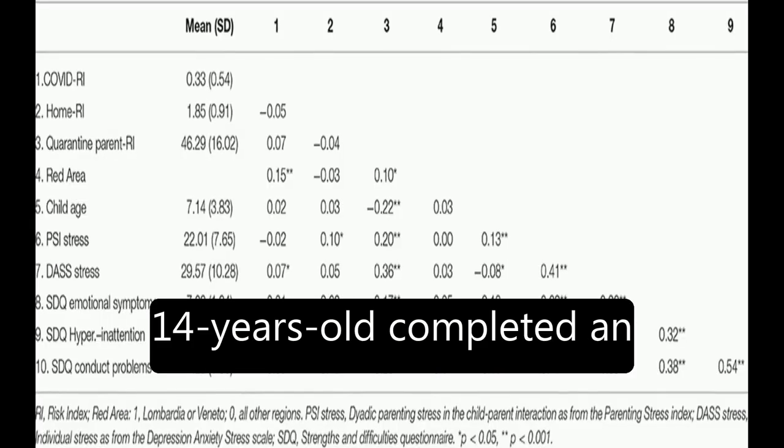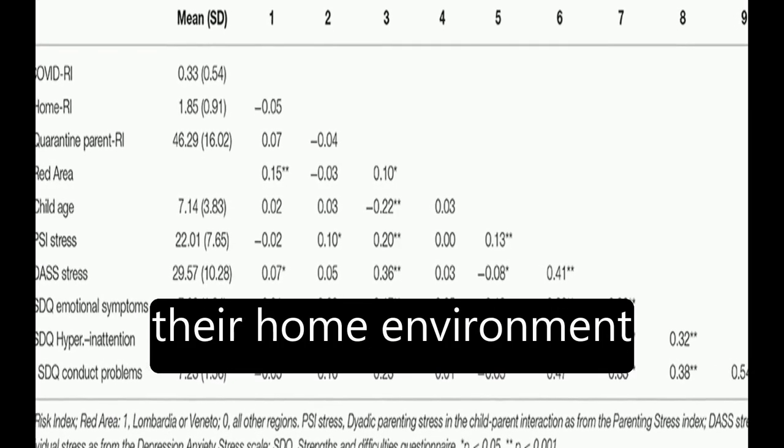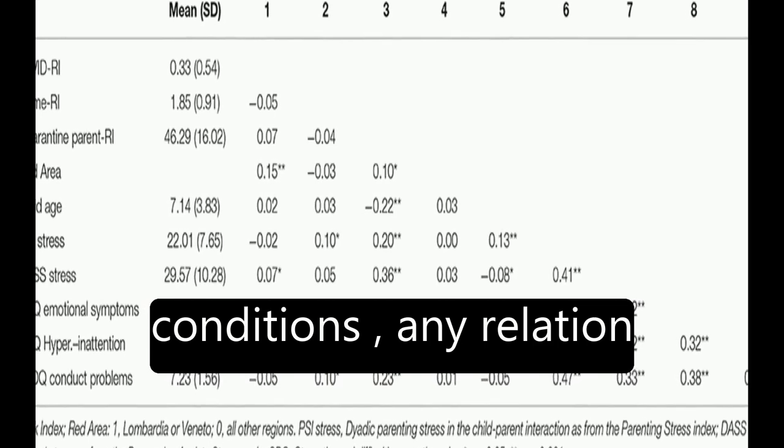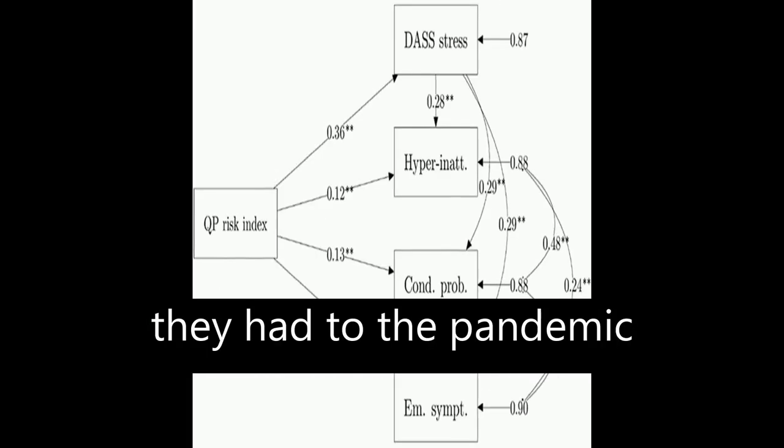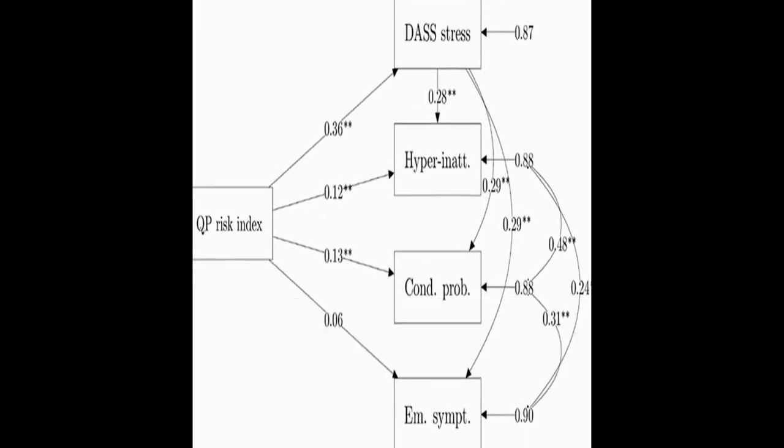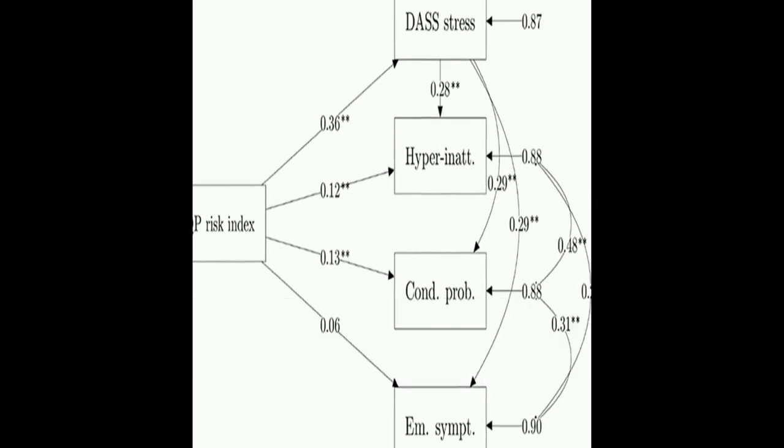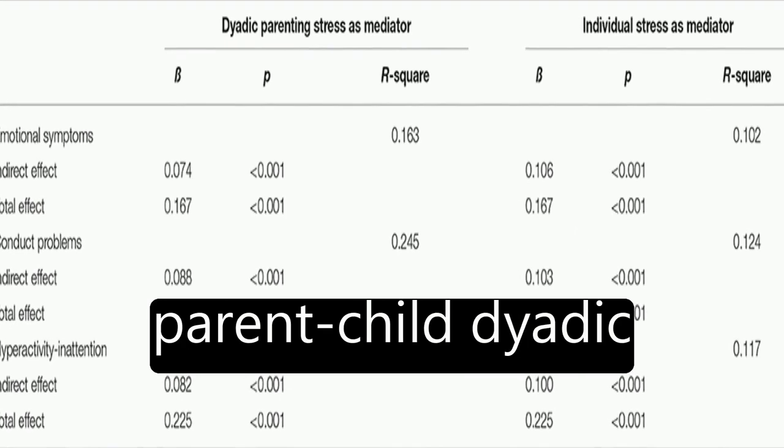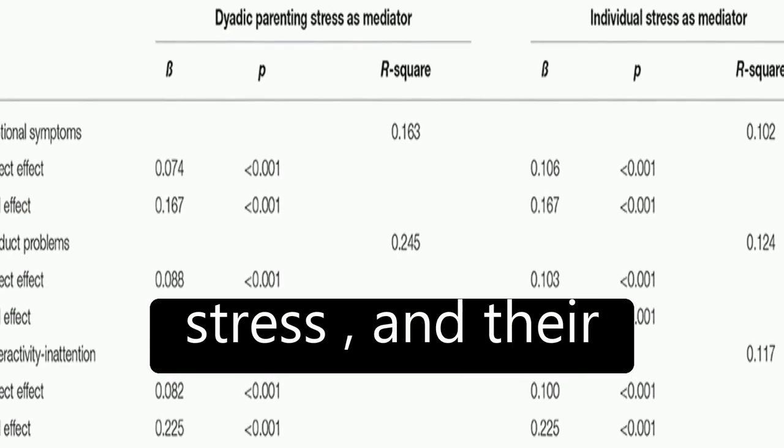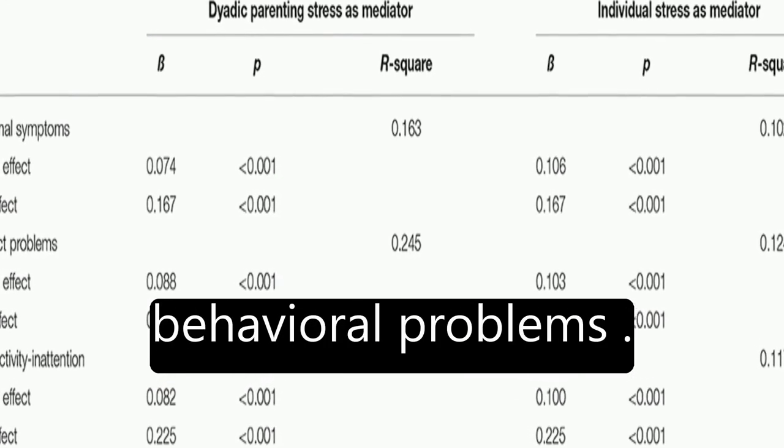Parents of children aged between 2 and 14 years old completed an online survey reporting their home environment conditions, any relation they had to the pandemic consequences, their difficulties experienced due to the quarantine, their perception of individual and parent-child dyadic stress, and their children's emotional and behavioral problems.